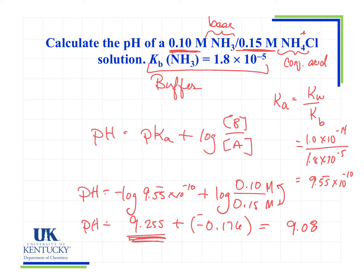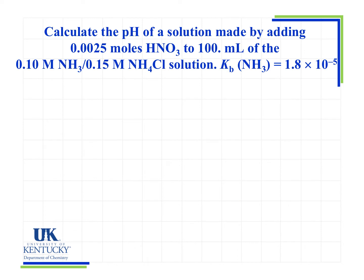The next two videos will cover adding an acid to this buffer and seeing how it changes the pH, and then adding a base and seeing how it affects the pH. In this next part, we calculated the pH of this buffer containing a weak base and its conjugate acid salt, and now we're going to have it do what buffers do.